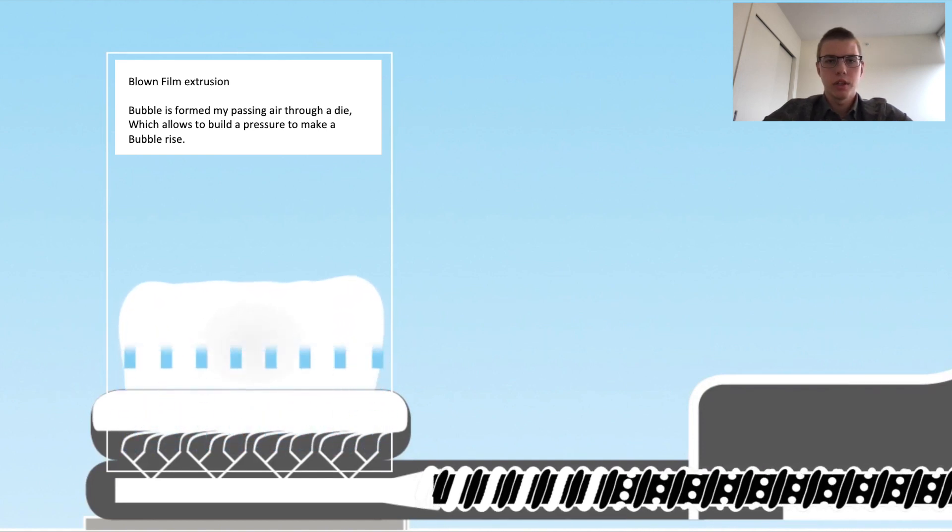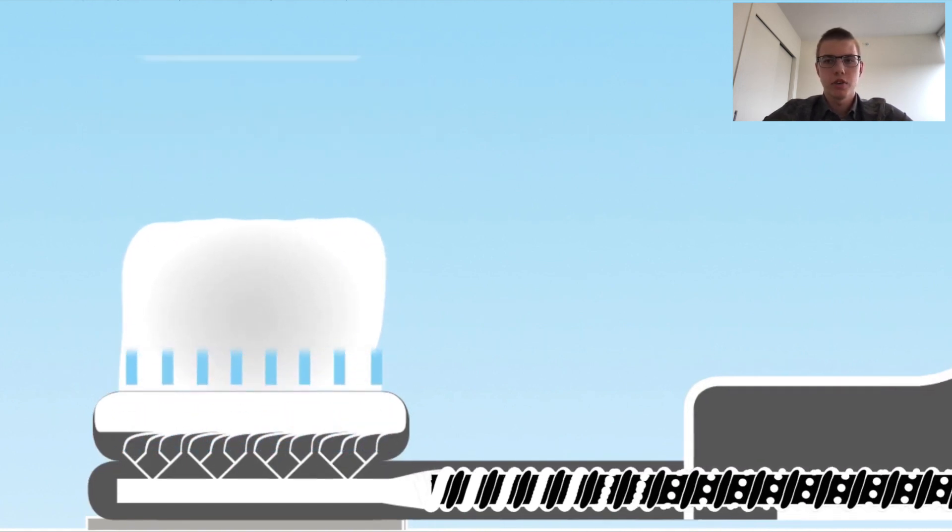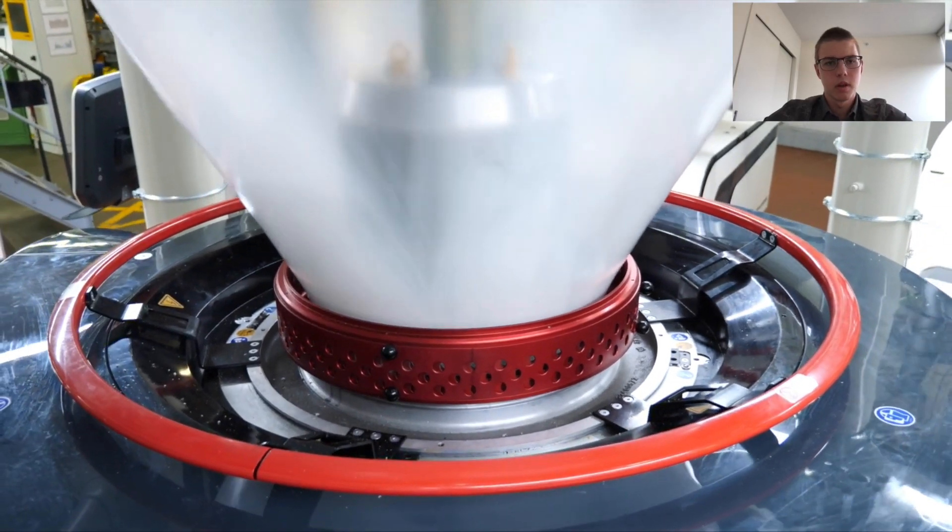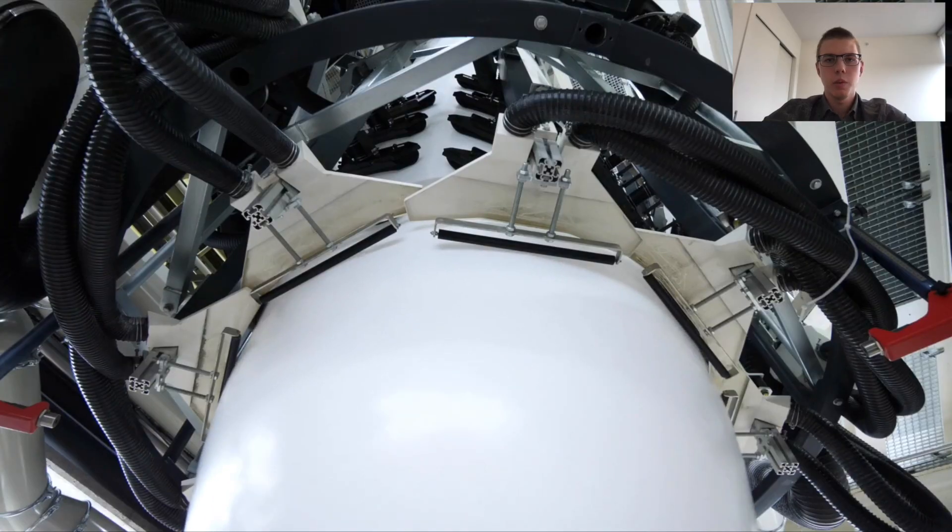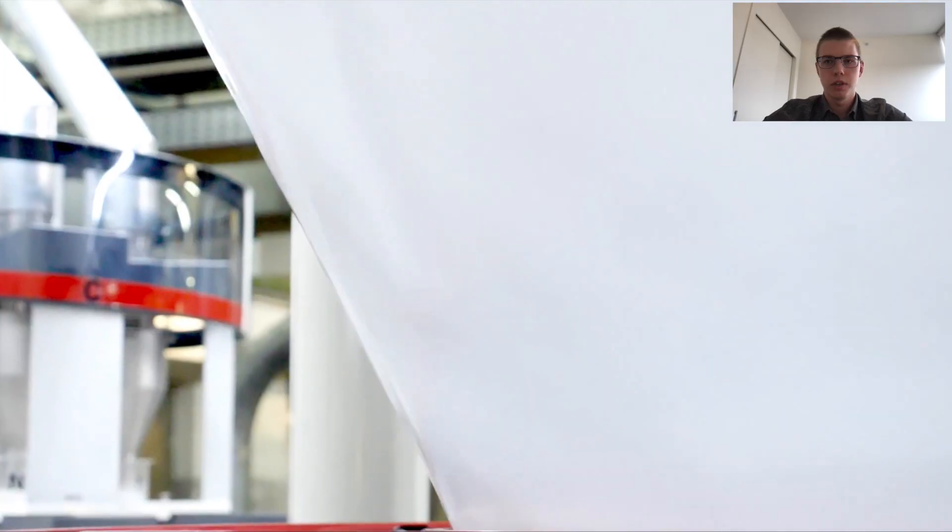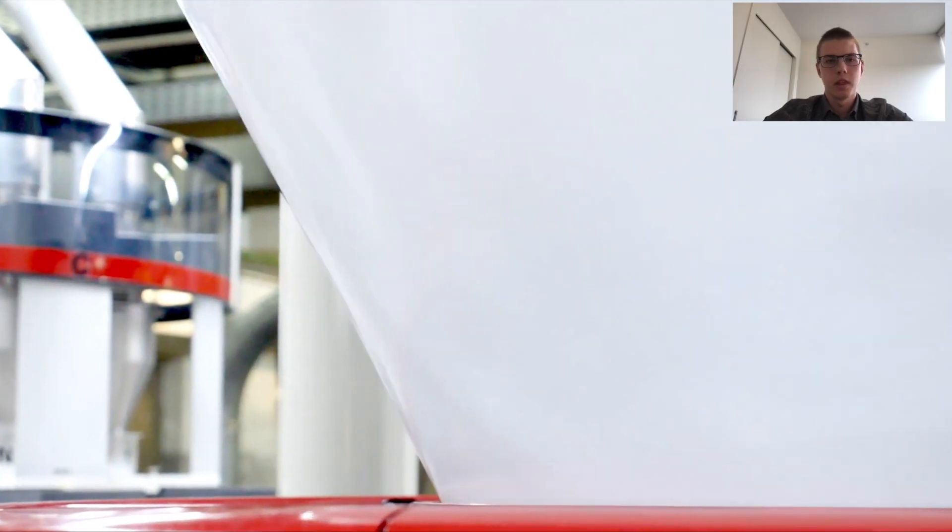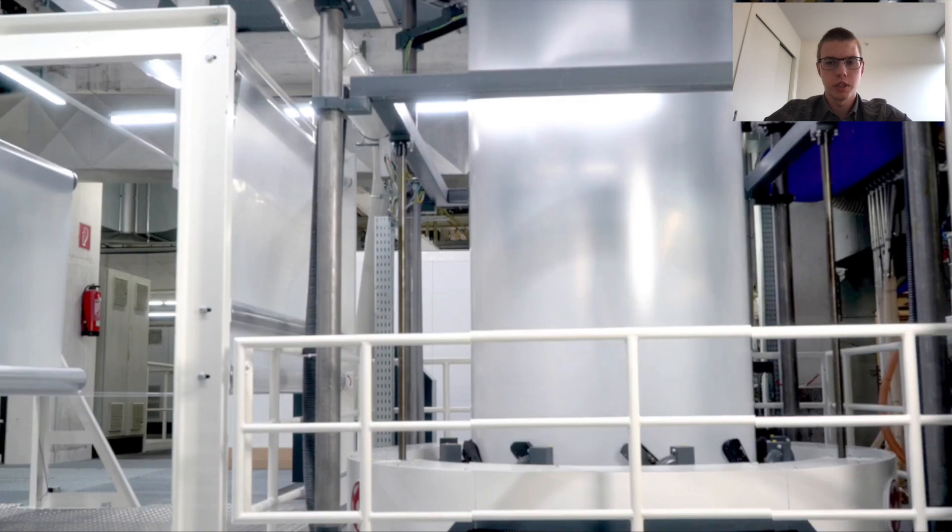Air is injected through a hole in the center of the die and the pressure causes the extruded melt to expand into a bubble. The bubble is pulled continually upwards from the die and a cooling ring blows air onto the film. The film can also be cooled from the inside using internal bubble cooling.